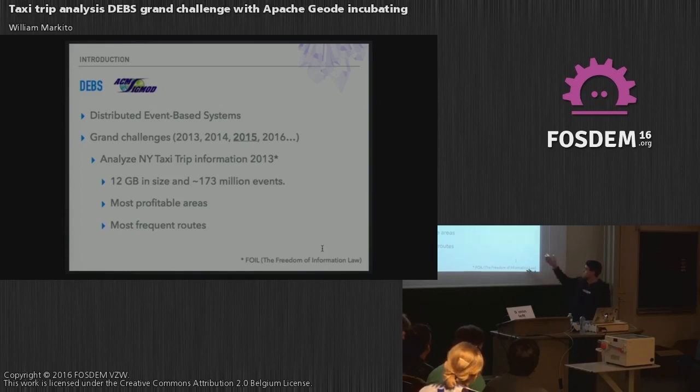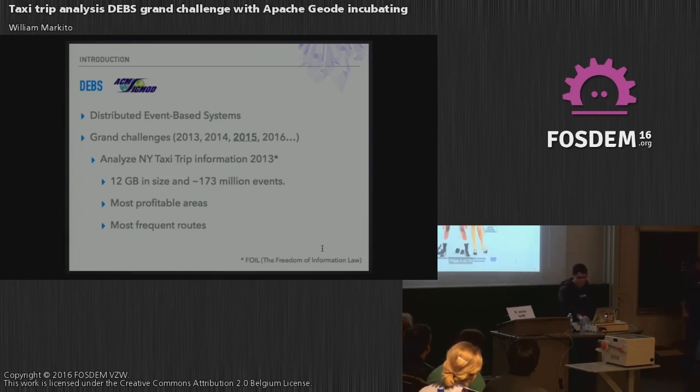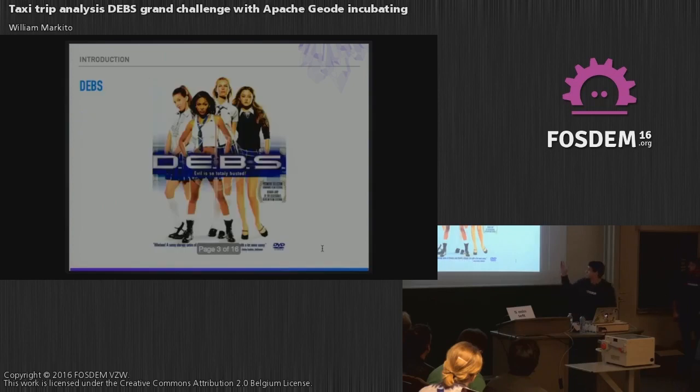but the idea is that you can implement this architecture and then scale it for really big data. They are asking two questions: they want to know the most profitable areas and the most frequent routes.